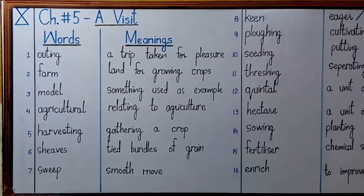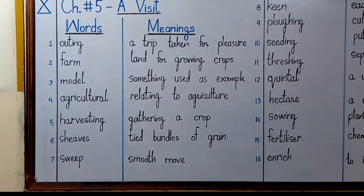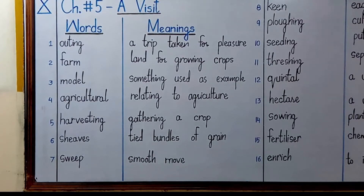Number seven is 'sweep', which means a smooth move. This word has been used as a noun in the chapter. Otherwise, as a verb it means to sweep the floor with a brush or a broom. So the noun 'sweep' means a smooth move with a brush or a broom.